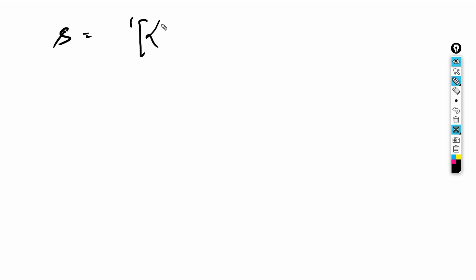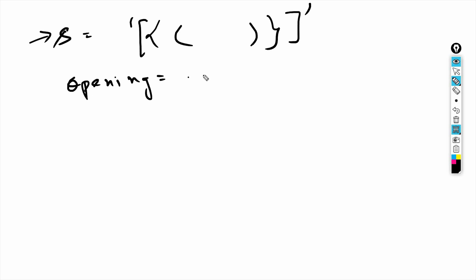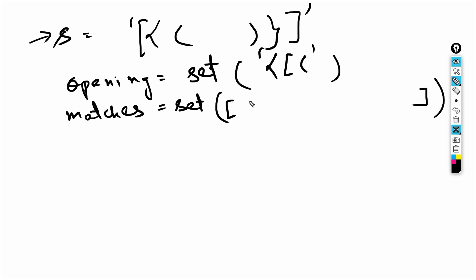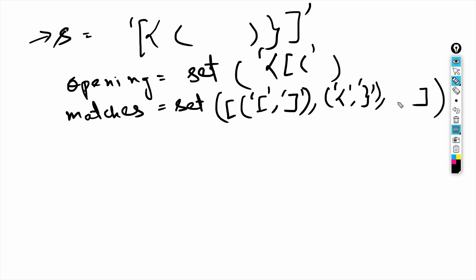So the string s might contain curly, square, and round brackets. We'll create an 'opening' set containing all opening brackets — curly, square, and round. We'll also create a 'matches' dictionary pairing each left bracket with its corresponding right bracket: left square with right square, left curly with right curly, left round with right round. Then we'll create an empty stack.